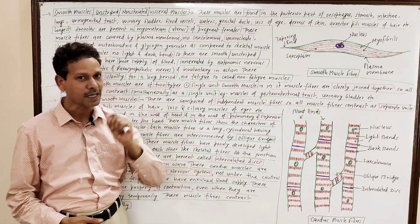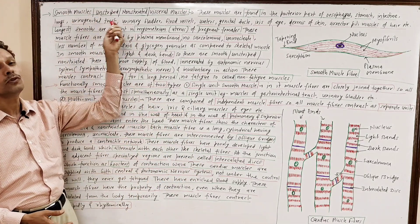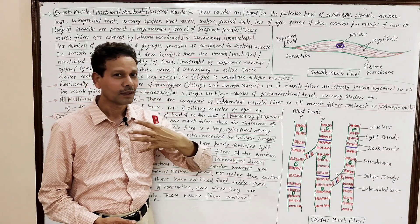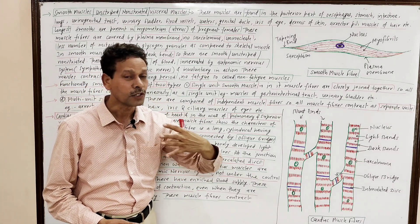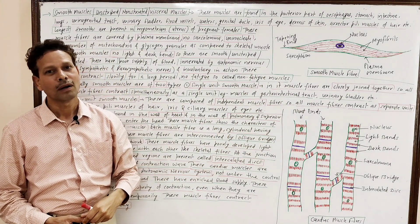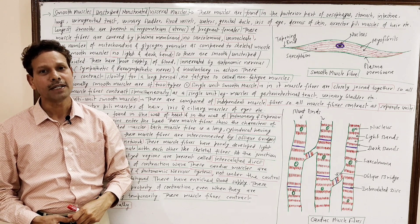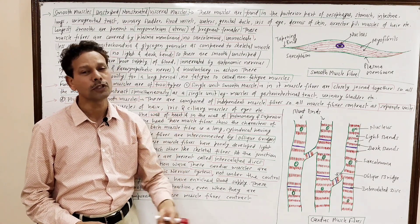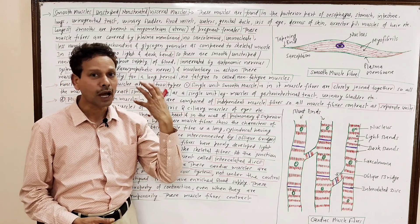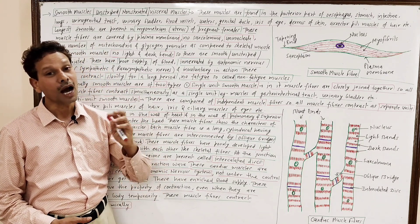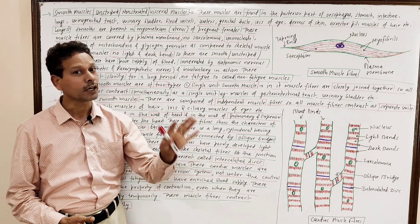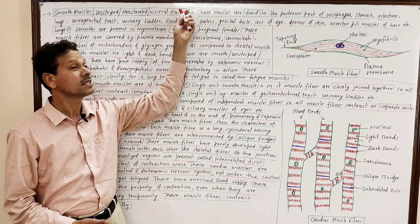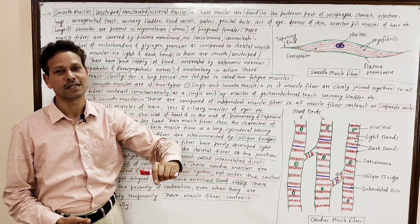Today we will discuss smooth muscles. In these muscles, there are no alternately arranged bands — no light and dark bands. So these are smooth muscles, without any stripes. These are unstriated, non-striated muscles. These are named visceral muscles.